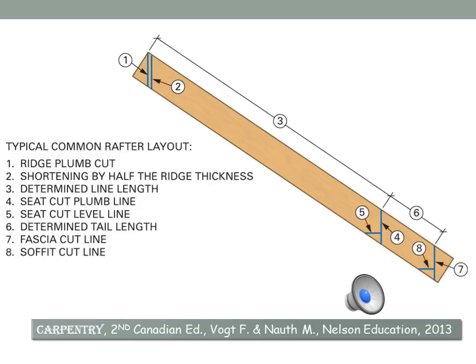This is a diagram of a common rafter layout. Starting at the top, right at the edge of the lumber, we start with our first ridge plumb line — the ridge plumb cut line where the rafter will be measured from. Measuring off that line, number three is the line length already calculated. Going back to the top, we shorten the rafter by half the thickness of the ridge board at right angles to the ridge plumb line — three quarters of an inch back for a standard 1.5-inch ridge board, giving us line number two. Number four is the heel plumb line after measuring out the line length. Coming off line four is line five, the seat level line, and between the two we have the bird's mouth. Added on is the tail. We can determine the tail length or slide the square out by the projection. For number seven we have the tail plumb cut line, and number eight is a level line to adjust for the fascia.